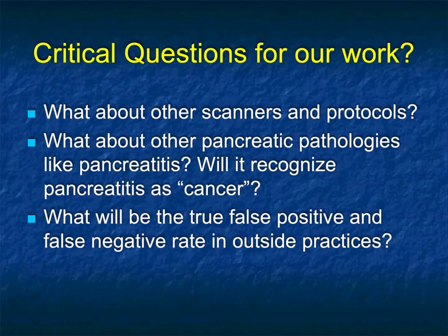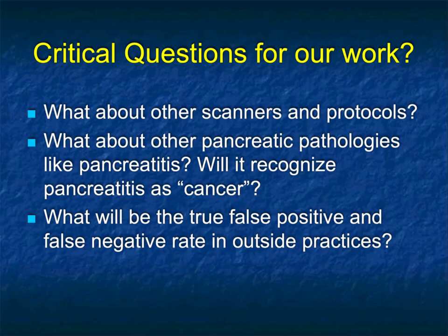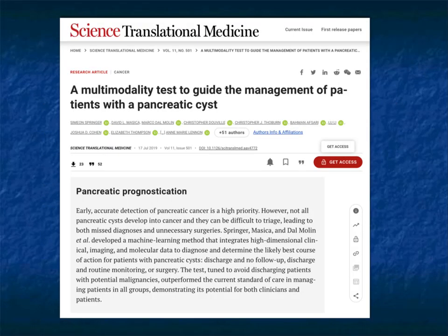Now, what are the critical questions? We did thousands of cases but essentially it was our scanner and our protocols. What about a patient with pancreatitis? We looked at radiomics — radiomics could distinguish normal pancreas from autoimmune pancreatitis and autoimmune pancreatitis from cancer — but we never looked at whether AI could do this. What are the true false positive and false negative rates in outside studies? That's going to be very important. We've done some work with outside scans and the results seem promising.